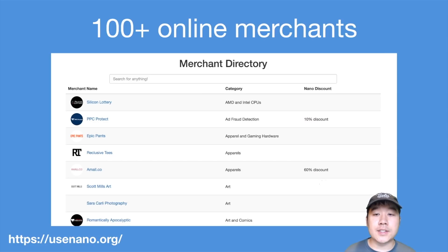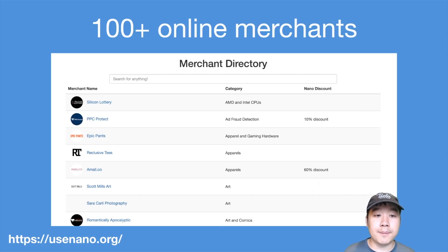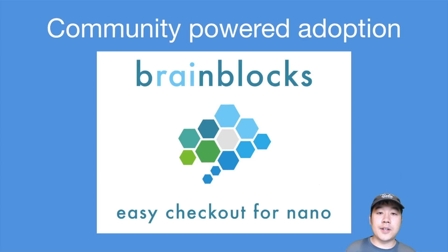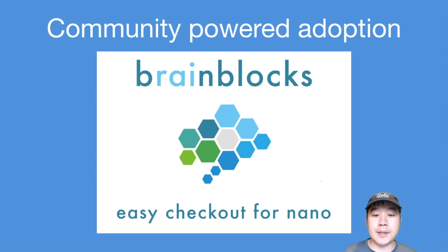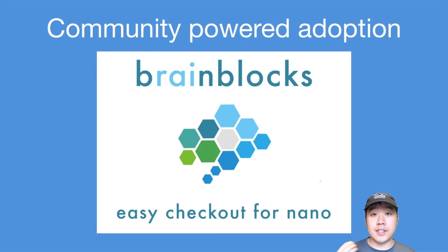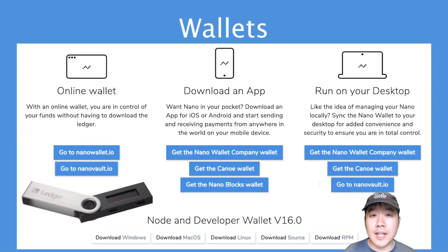Moving on to more positive topics — adoption. There are many merchants you can find at usenano.org's merchant directory, over 100 at the time. Admittedly most are small, niche, mom-and-pop shops, but you have to start somewhere, and given how fervent the community is, I have no doubt they'll continue gaining more adoption just by word of mouth. Another instance of community-driven adoption is Brain Blocks, built by a big Nano fan back when it was RaiBlocks. It's an easy checkout app and solution for Nano that makes it easy for companies to accept Nano and has been adopted by merchants wanting to integrate it into their checkout system.